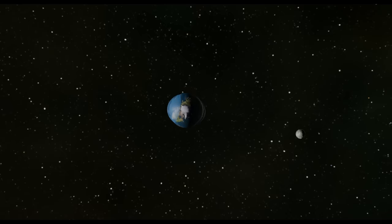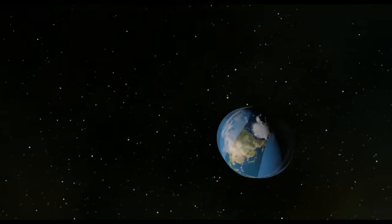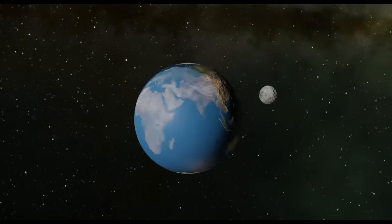We've probably all heard the moon tugs on the oceans and causes the tides. Superficially, yeah, that makes sense. But if that's the case, then why does the ocean also bulge on the other side of the earth?